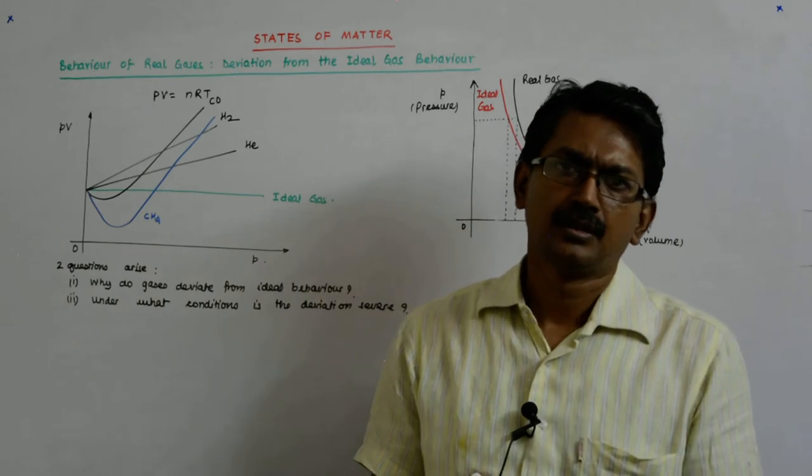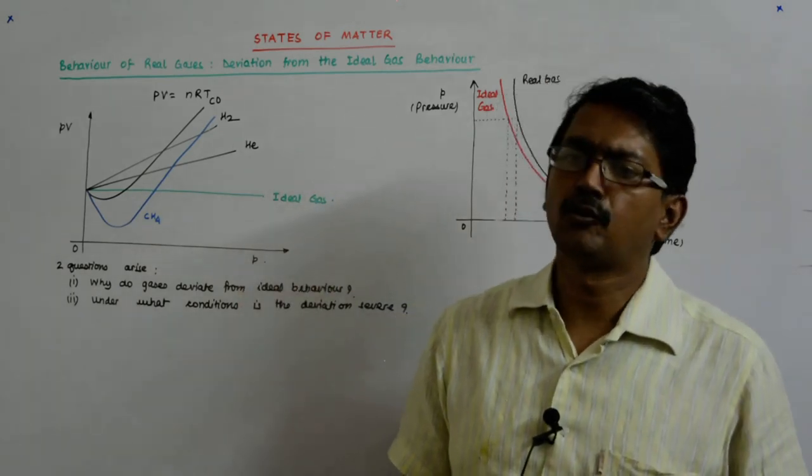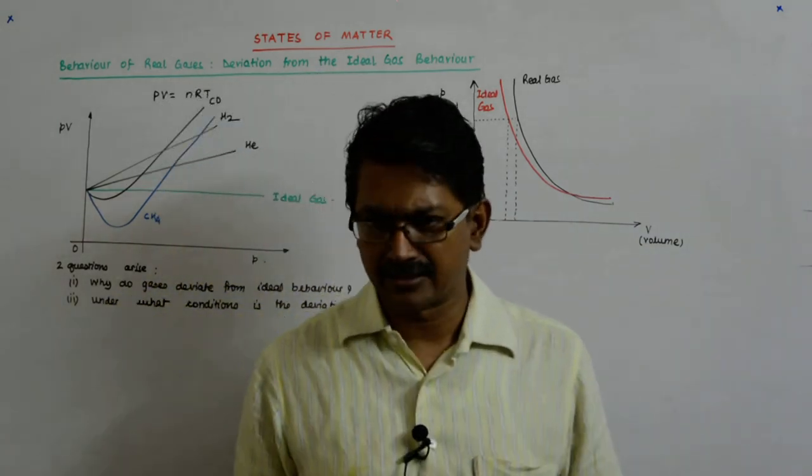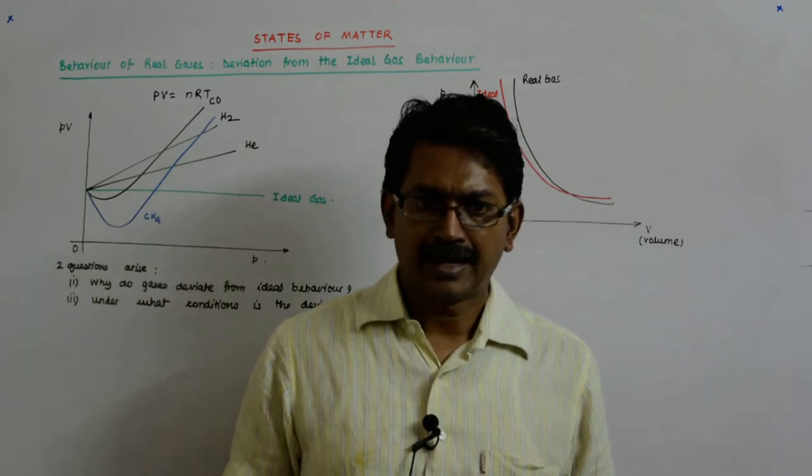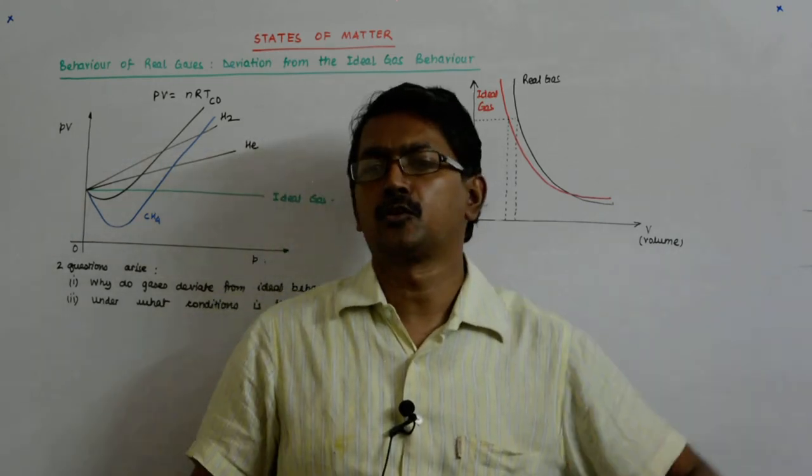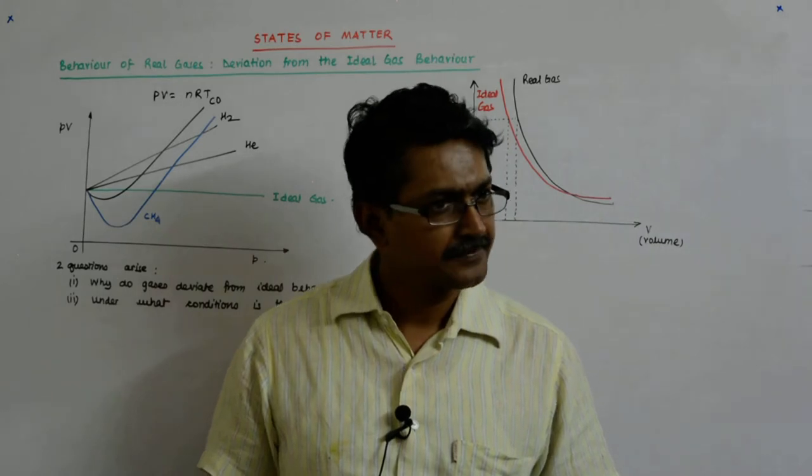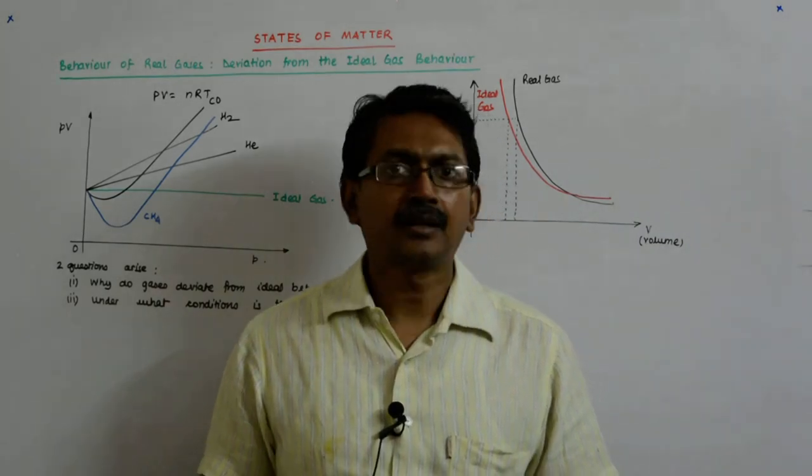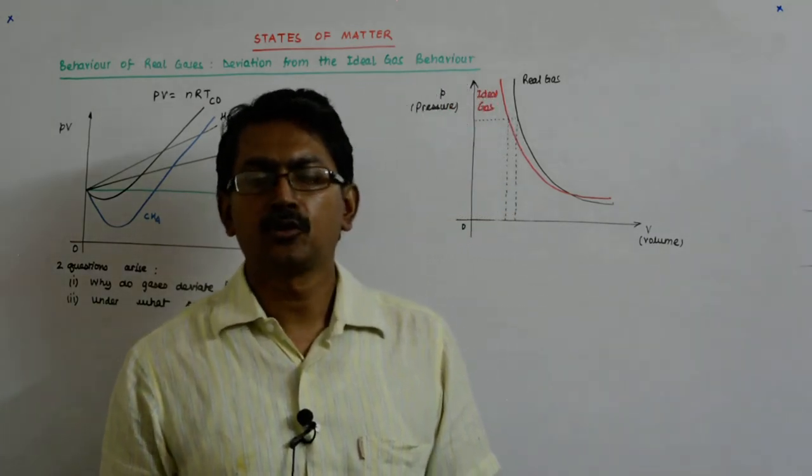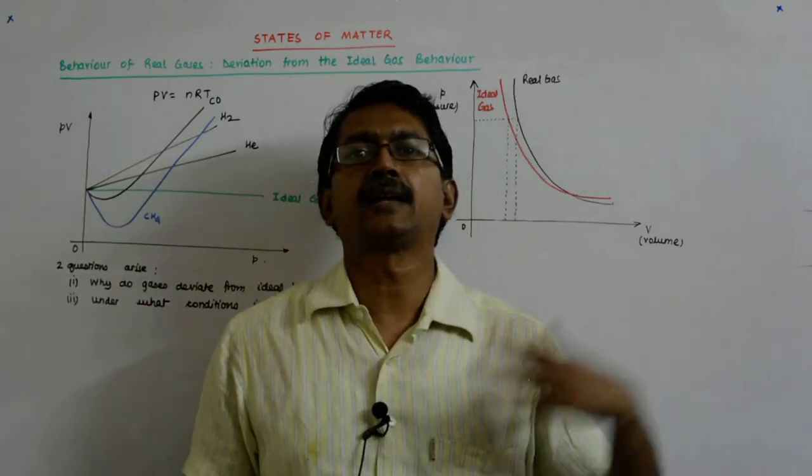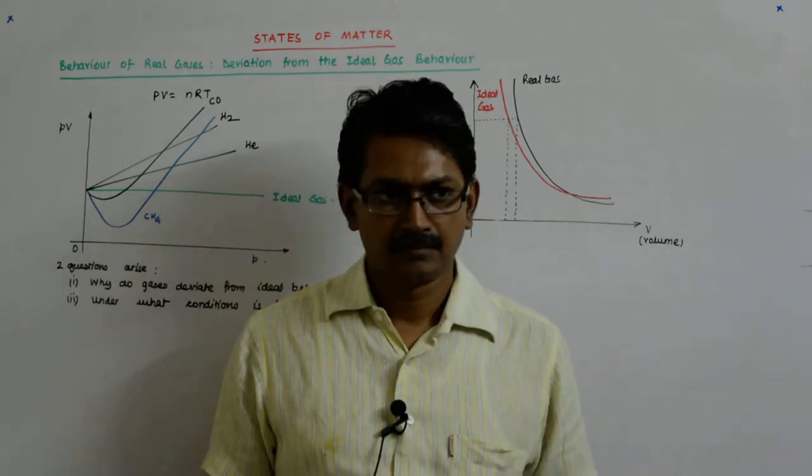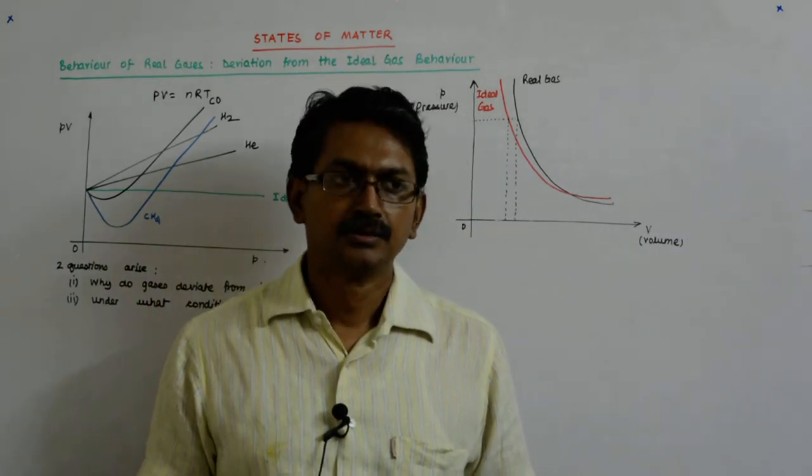We made some assumptions. The first assumption if you remember that we made was there was no intermolecular interaction. And we were right to an extent. We said that it will be so because they are so far apart compared to their own sizes. They are about more than ten molecular distances, their own size. That is the intermolecular distance. Ten is huge.